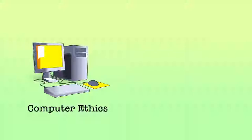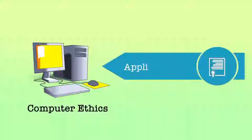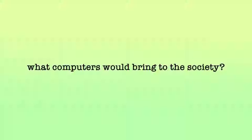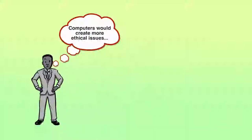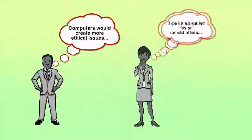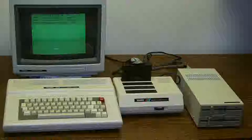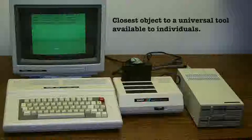When the field was first discovered in the 1970s, applied ethics was used to describe the new concept. At that time, there was much controversy about what computers would bring to society. Some thought that computers would create more ethical issues whereas others thought it put a so-called twist on old ethics. In the 1980s, the computer was thought to be the closest object to a universal tool available to individuals. The integration of the computer into everyday society was not easy — the generation of computers was new and exciting but nobody had used it before, including businesses and individuals.